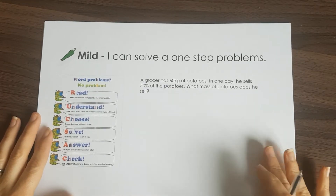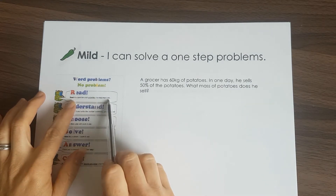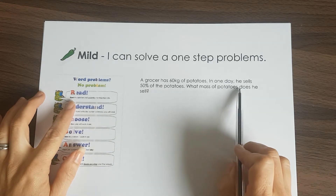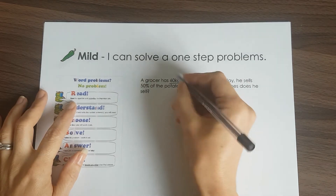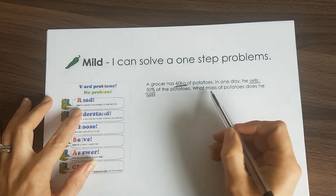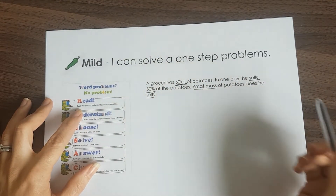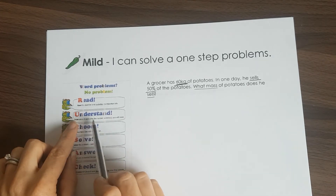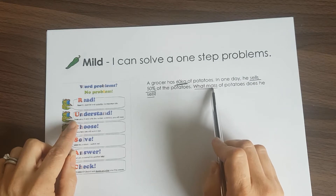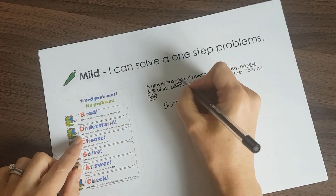So here is our first problem and this is the mild option — it's a one-step problem. So using rucksack, read the question and underline the important bits. A grocer has 60 kilograms of potatoes. In one day he sells 50% of the potatoes. What mass of potatoes does he sell? So the important part is that there's 60 kilograms of potatoes — I'm going to underline that bit. He sells 50%. What mass is what we're being asked. You have to understand that mass means the weight of the potatoes he has sold.